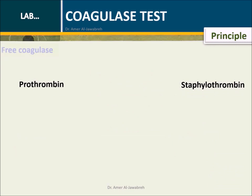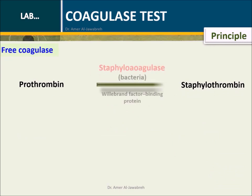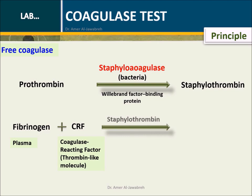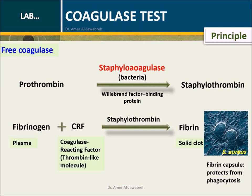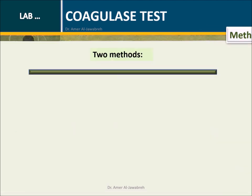Principle — free coagulase: Staphylococci, along with von Willebrand factor, activates prothrombin to Staphylothrombin. Staphylothrombin reacts with fibrinogen with the activation of CRF (coagulase reacting factor) to produce fibrin. Fibrin forms a capsule around the bacteria as a virulence factor against phagocytosis.